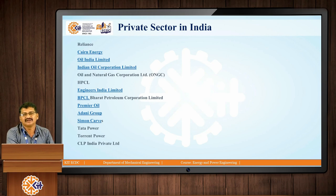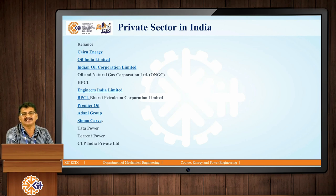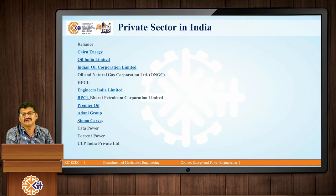Reliance constructed a pipeline from Rajasthan to Gujarat to convey natural gas. CNG terminals — compressed natural gas terminals — were also opened, because transporting natural gas is very difficult. At CNG terminals, the gas is compressed into liquid form, which can then be easily transported by pipeline or by road. When it reaches the destination, it is converted back into gas and utilized. So CNG terminals are required for gas transport.